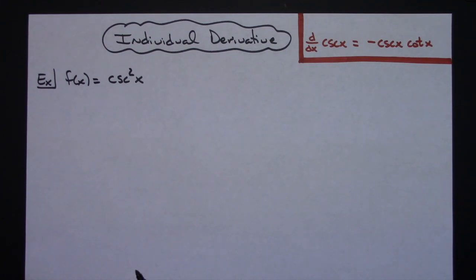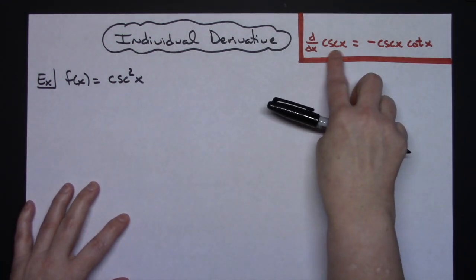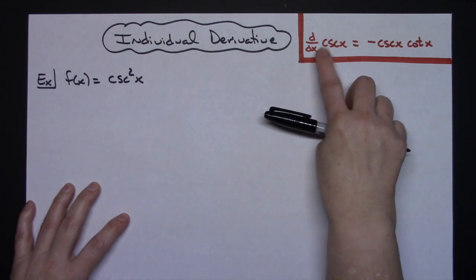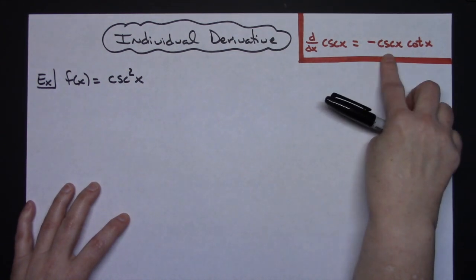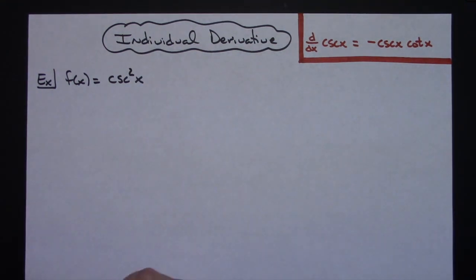The main part that makes this difficult is you have to have the derivative of cosecant memorized. The derivative of cosecant is negative cosecant cotangent. I put that up there for reference because we will need it.